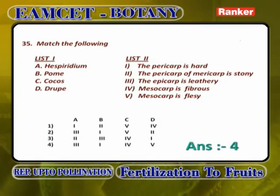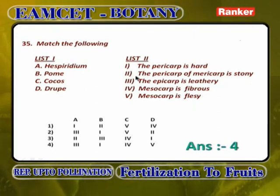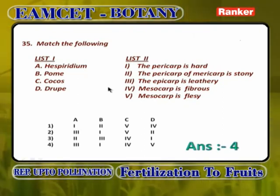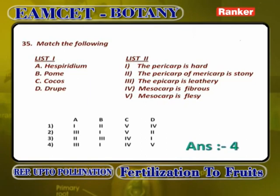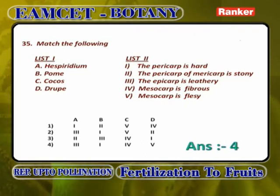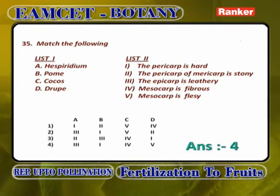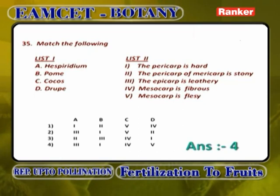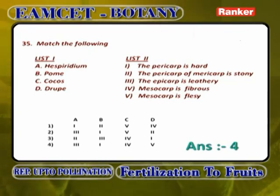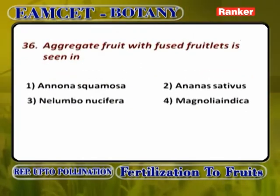Matching: Hesperidium — epicarp is leathery, so 3. Pome — pericarp is very hard (papery/membranous), so 1. Cocos — mesocarp is fibrous, so 4. Drupe — mesocarp is either fleshy or juicy, so 5. Answer: 3, 1, 4, 5.